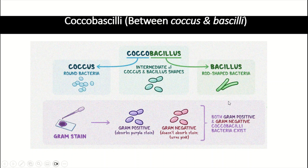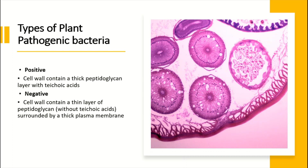Gram positive coccobacilli absorb purple stain, while gram negative coccobacilli do not retain the purple stain and turn pink in color. So what is the main difference between gram positive and gram negative bacteria?